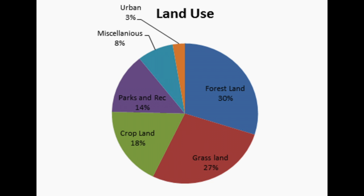In 2007, a major study of land uses showed that 30% of land was forest land, 27% was pasture and rangeland, 18% was cropland, 14% was special uses, 9% miscellaneous uses, with an additional 3% for urban land.